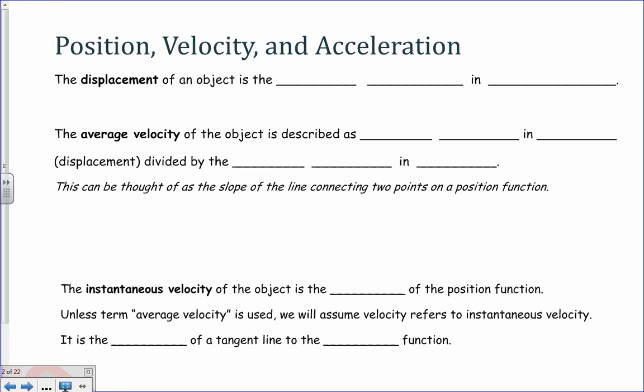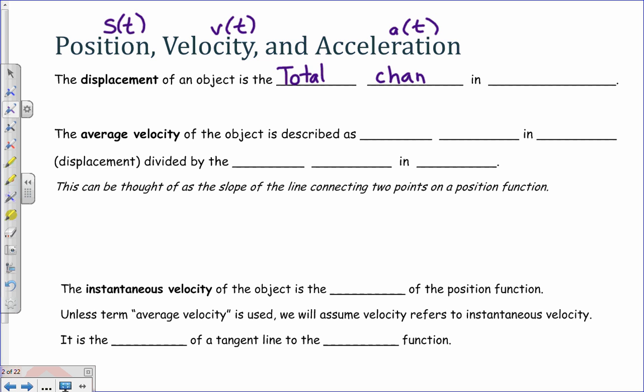Position is typically notated as S of T, velocity will be notated as V of T, and acceleration will be A of T. So the displacement of an object is the total change in position, the change in position.